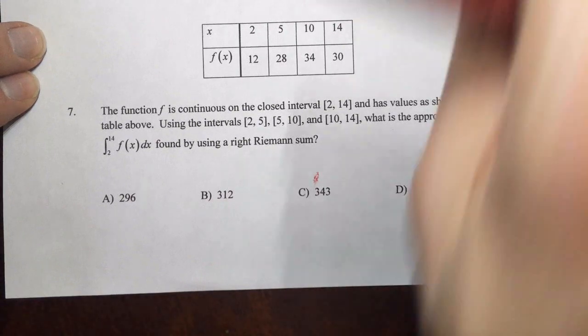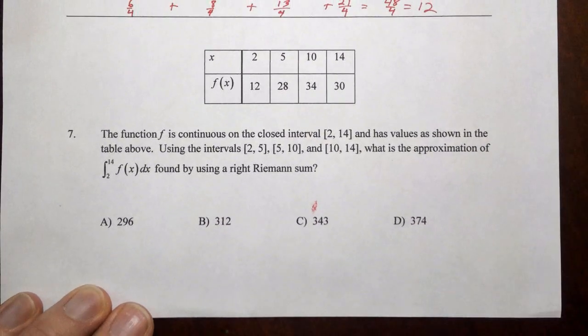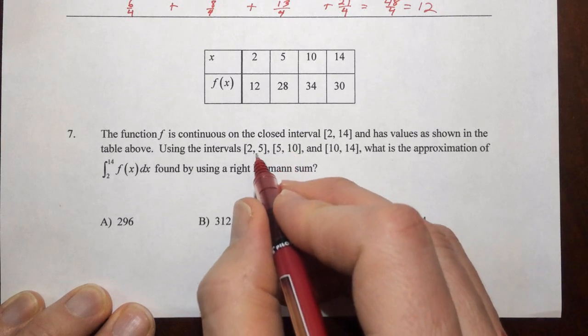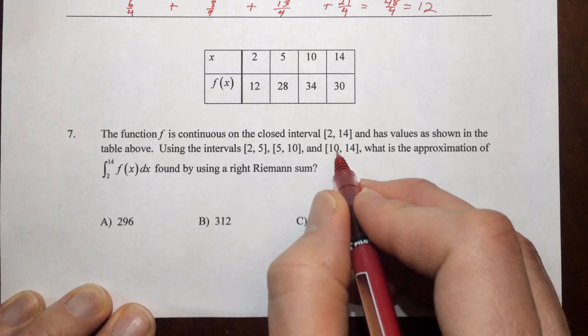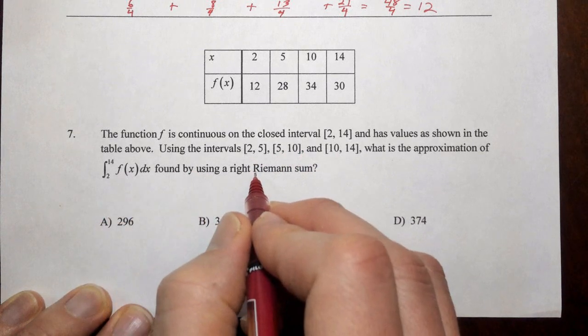And finally, with number seven, f is continuous on the closed interval from two to fourteen, using the intervals from two to five, five to ten, and ten to fourteen, what's the approximation for this integral using a right Riemann sum?